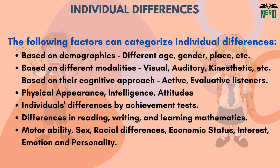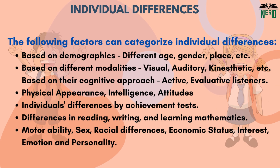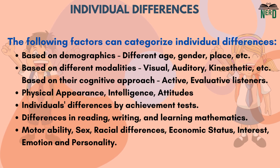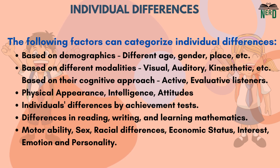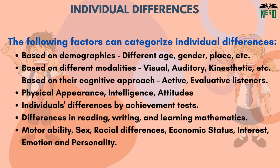The following factors can be categorized as individual differences: learner types based on demographics such as different ages, gender, and place; individual differences based on modalities like visual, auditory, and kinesthetic; differences based on cognitive approaches such as active and evaluative listening; differences based on physical appearance, intelligence, and attitudes; differences in abilities as measured by achievement tests, visible in reading, writing, and learning mathematics; and differences based on motor ability, sex, racial differences, economic status, interest, emotion, and personality.